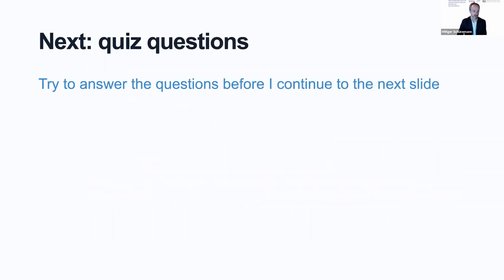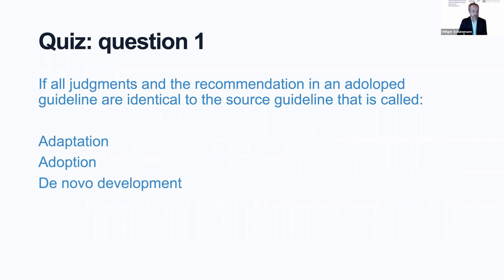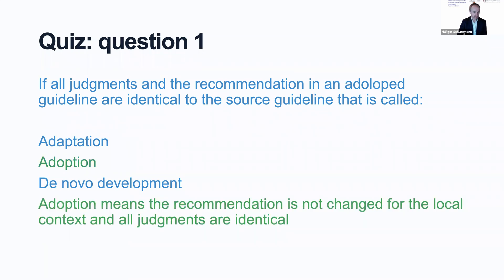Next, I will talk about the quizzes. You can go at your own pace — try to answer the question before I continue to the next slide. Question one: if all judgments and the recommendation in an adopting guideline are identical to the source guideline, that is called adaptation, adoption, or de novo development? This is actually adoption — it means the recommendation is not changed for the local context and all judgments are identical.